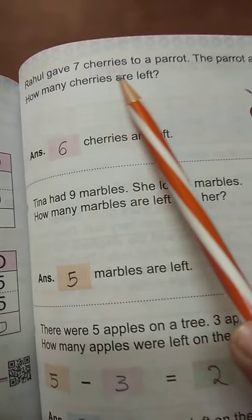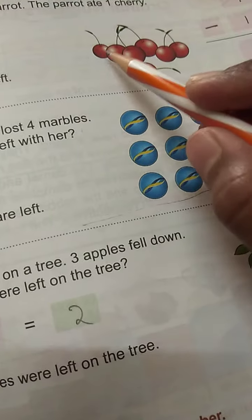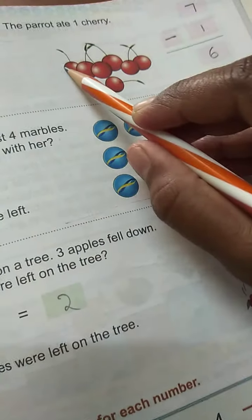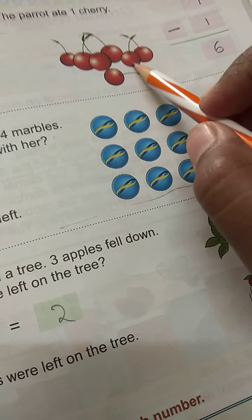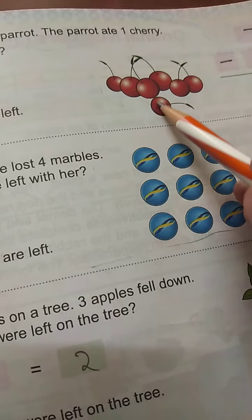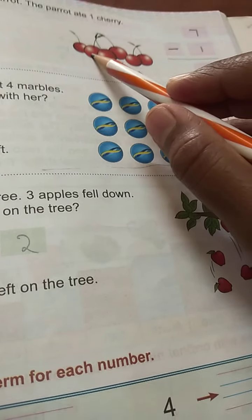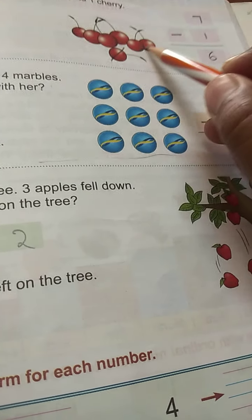So word problems come next. Rahul gave 7 cherries to a parrot. The parrot ate 1 cherry. So 7 cherries. 1, 2, 3, 4, 5, 6, 7. So 7 cherries to the parrot. Only 1 cherry it ate. How many left? 1, 2, 3, 4, 5, 6. So 6 cherries are left.